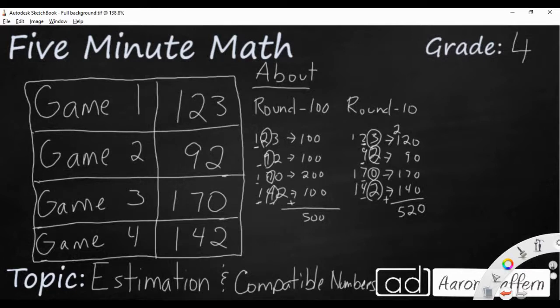What if we do compatible numbers? Compatible numbers are numbers that are close to the original numbers, but they don't necessarily follow the rounding rules. They're also used for estimation, but you don't have to follow any particular rules. When I'm looking at compatible numbers, I'm looking for numbers that I can easily add together.